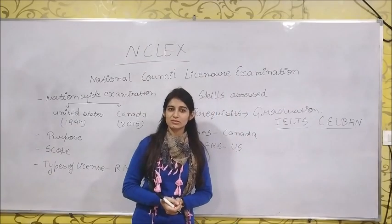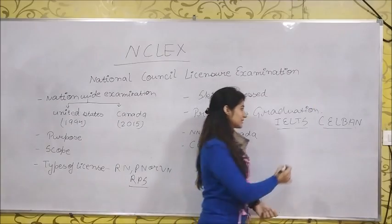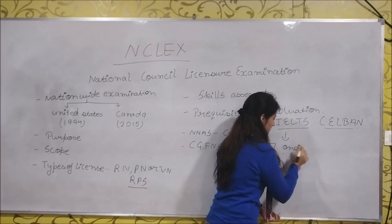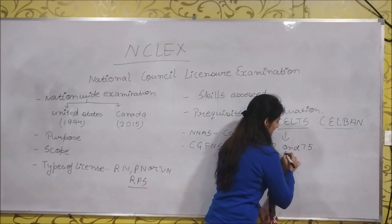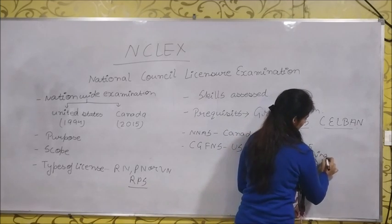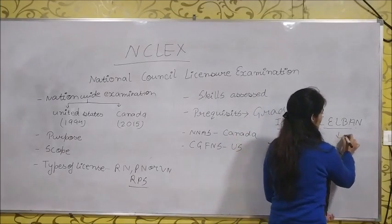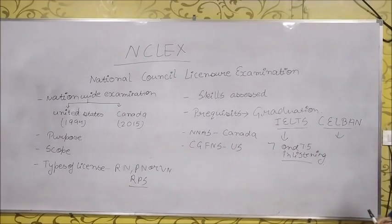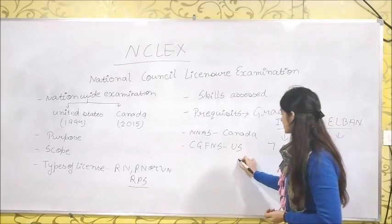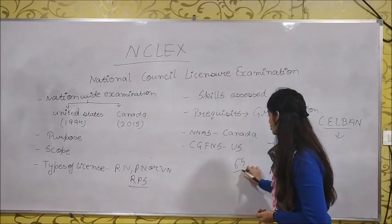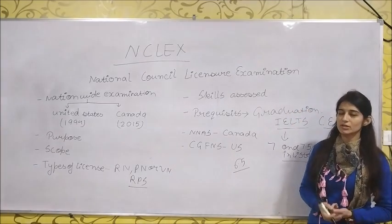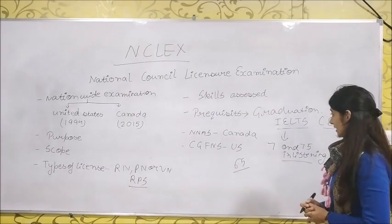The band requirement in IELTS is different in different states. In Canada, the band requirement is 7 each and 7.5 in listening. The scores for CELBAN are different. In United States, the IELTS requirement is less compared to Canada — that is 6.5 each. However, California is a state where there is no IELTS requirement; we can give the exam for California without IELTS.